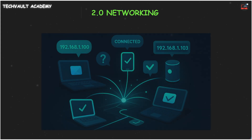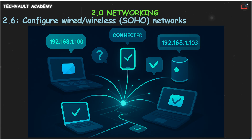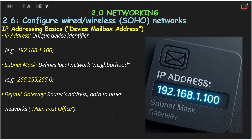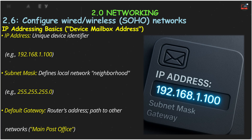This is all about understanding how our devices get their digital addresses to communicate. Think of an IP address as your device's unique mailing address on a network. To send or receive data, it needs a complete mailing label. This includes the IP address itself — the specific street number, like 192.168.1.100 — the subnet mask, like a postcode telling your device which local neighborhood or subnet it belongs to, for example 255.255.255.0, and the default gateway.